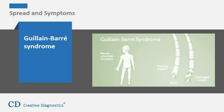Guillain-Barré syndrome is characterized by weakness and numbness or tingling in the legs and arms, and possible loss of movement and feeling in the legs, arms, upper body, and face.